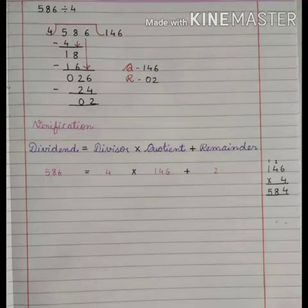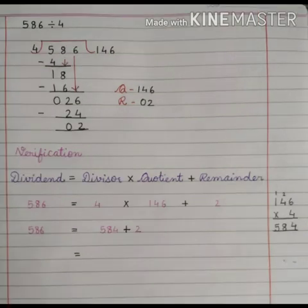Now insert values in it. 586 is equal to 146 into 4 plus 2. Here we have to write the rough work at the right side of the notebook. When we multiply quotient and divisor, we get 584 and then we will add the remainder in it.